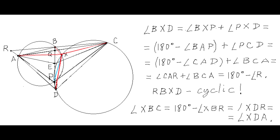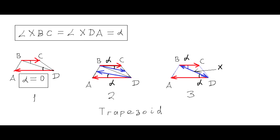This proves that our constructed point X satisfies the conditions of the problem. But we are not done yet — we have only shown the statement holds for the X we constructed. What if there is another point or multiple points X with these properties? We must examine whether multiple such points can exist.